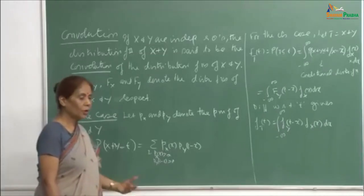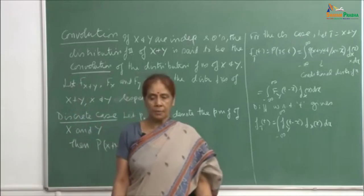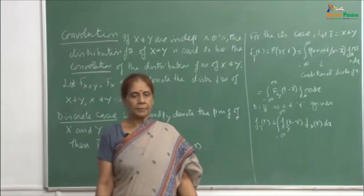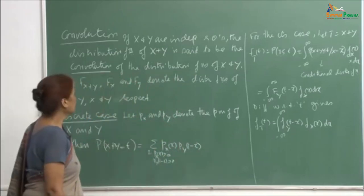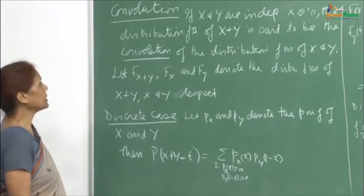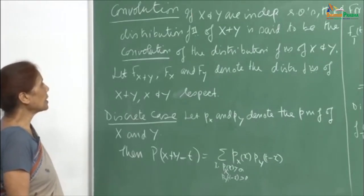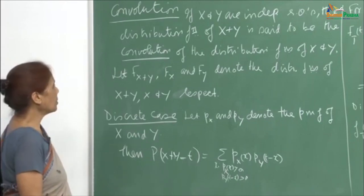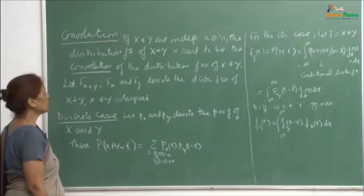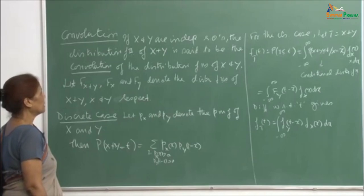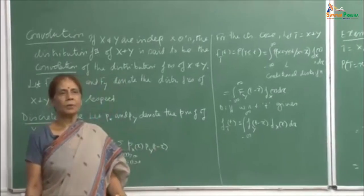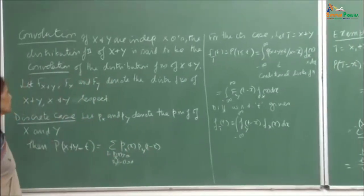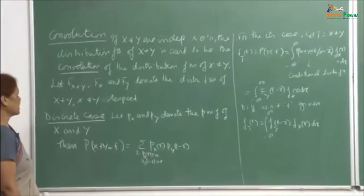In this lecture I will be talking about convolution, and again this is one of the tools that we will use — just like MGF — to sometimes compute the distribution function and the density function for different kinds of random variables or functions of random variables. Mostly the convolution is used for computing the distribution function of sums of random variables.